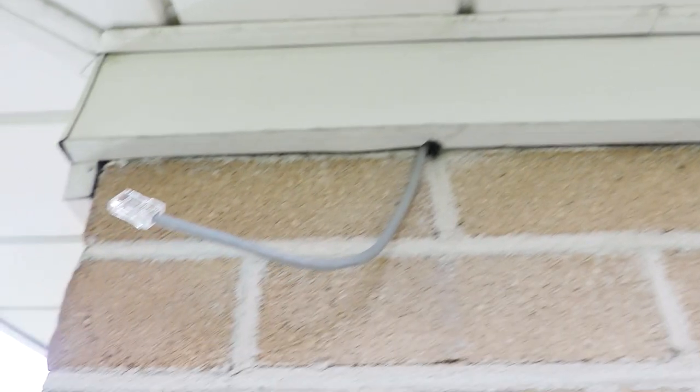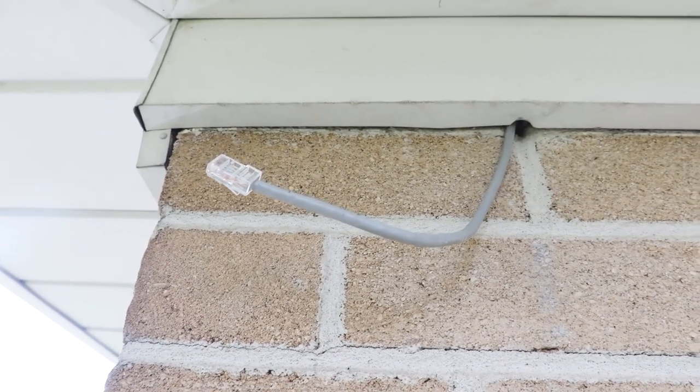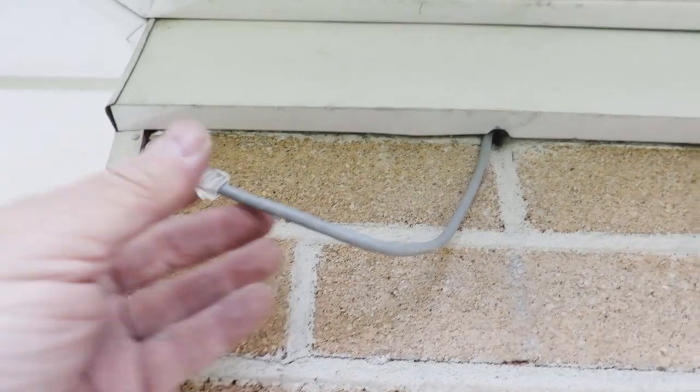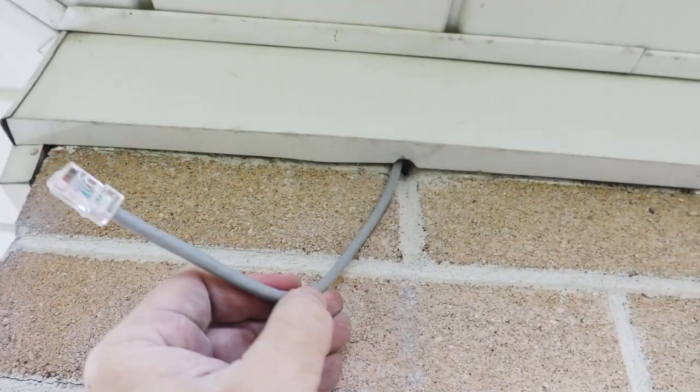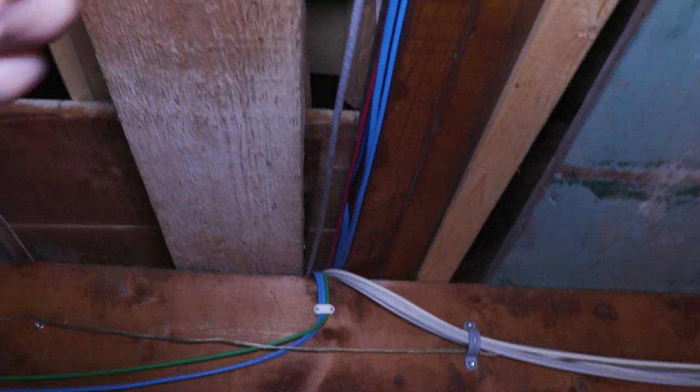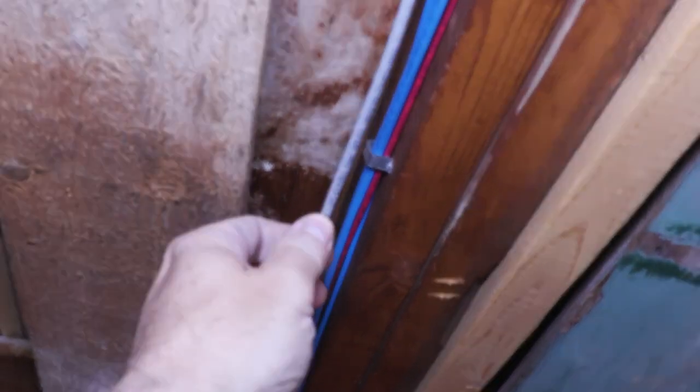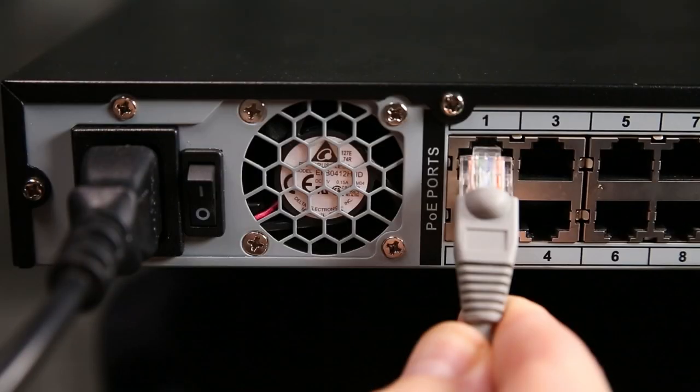The first step is to run Ethernet cabling to the location using either the supplied cable or raw Cat5e cabling. We've run cabling through the garage interior structure. It's important to not connect the NVR end of the Ethernet cable until after the camera is fully installed.